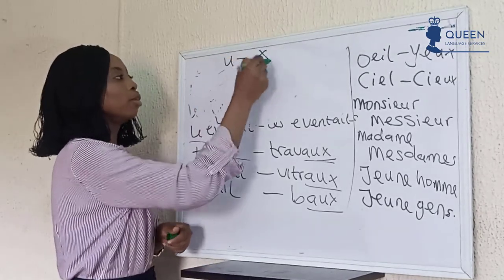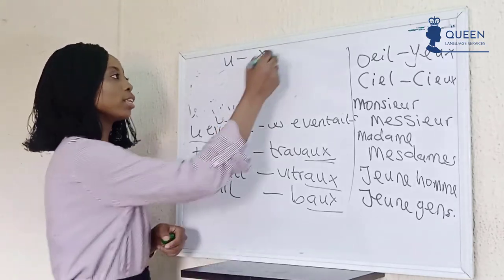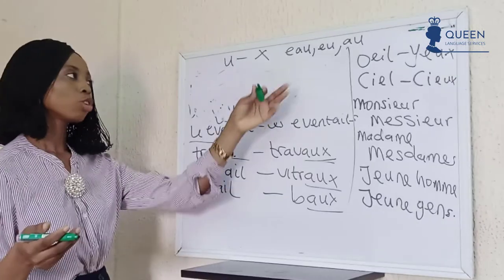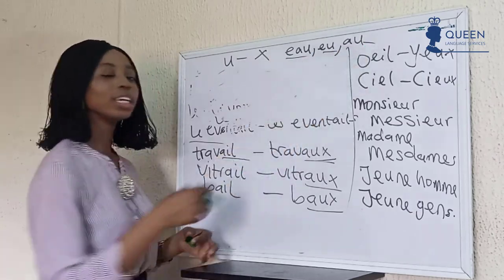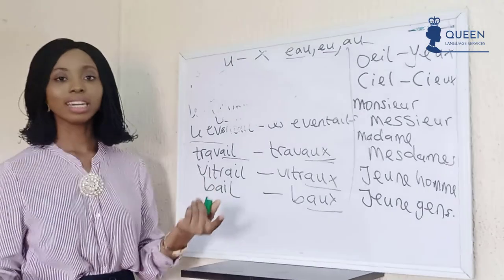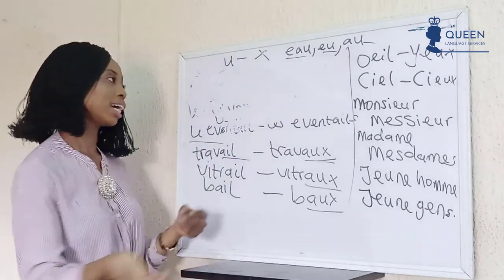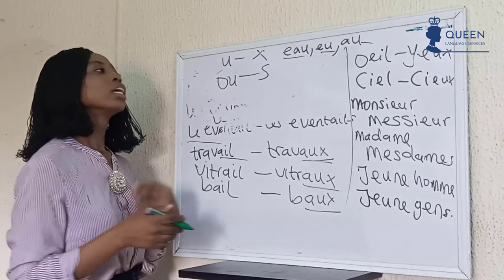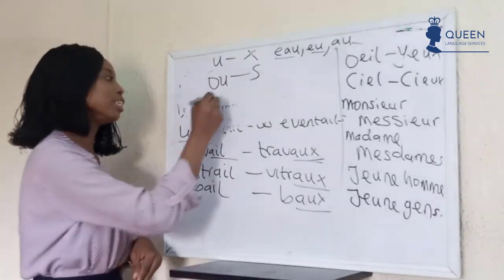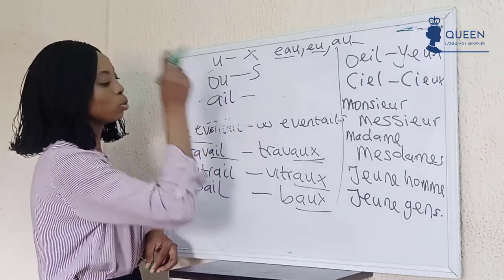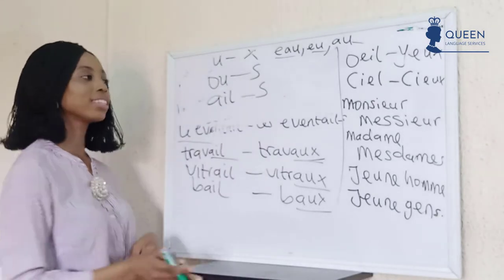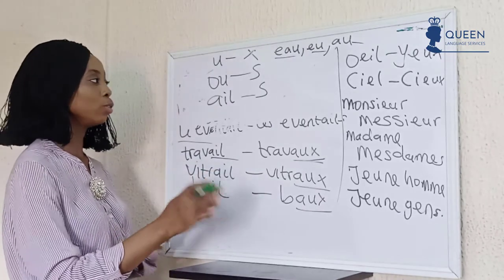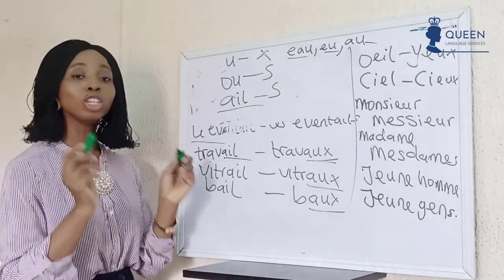For words having -eau, -eu at the end, we have them take -x in the plural. We looked at exceptions to this rule — some -ou words also normally take -x, but there are seven exceptions. For -al endings, the plural form is -aux, with exceptions like 'festival' → 'festivals.' And for -ail endings, the plural is -aux, not forgetting exceptions. There are also words whose singular and plural forms are completely irregular with no regular pattern.